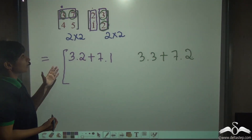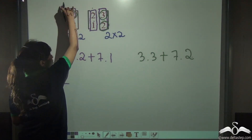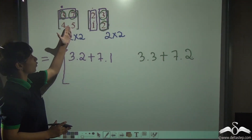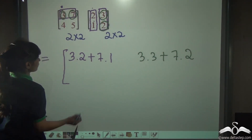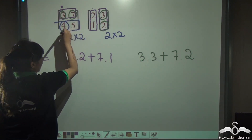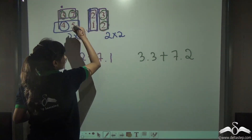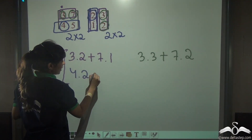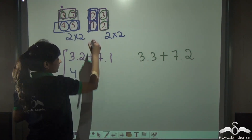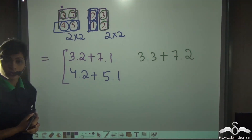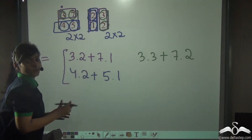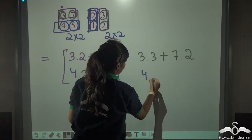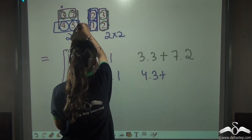After finishing the multiplication of the first row with both columns, we move on to the second row and repeat the same process. Take the second row and multiply it with the first column of the second matrix: 4 into 2 plus 5 into 1. Then second row, second column: 4 into 3 plus 5 into 2.